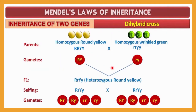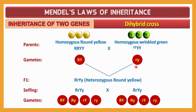Now let's understand the dihybrid cross. The first parent is homozygous round yellow with genotype capital RR and YY — homozygous dominant. The second parent is homozygous wrinkled and green, meaning recessive traits — homozygous recessive. When these parents form gametes, all gametes from the first parent will have capital R and Y. All gametes from the second parent will have small r and y.